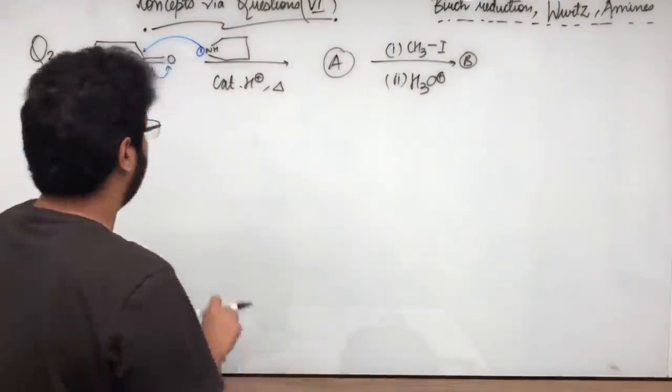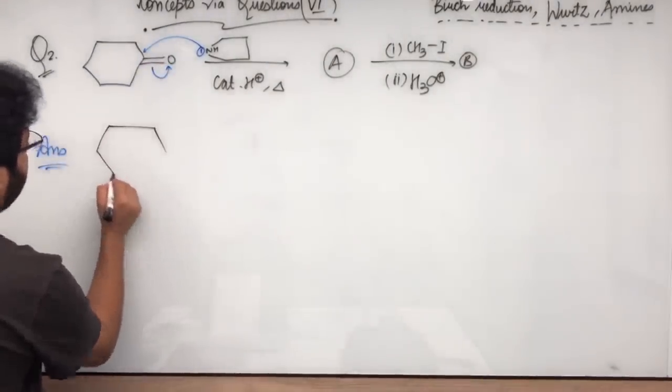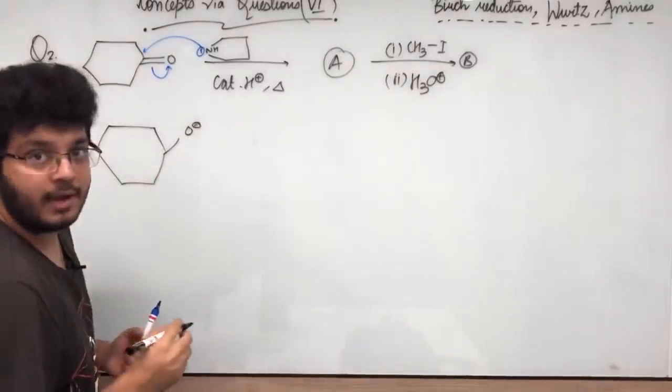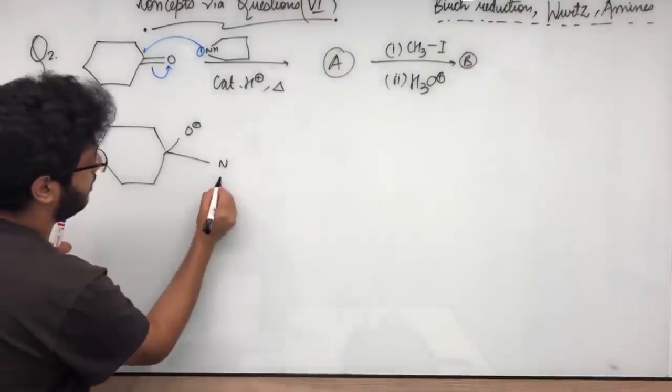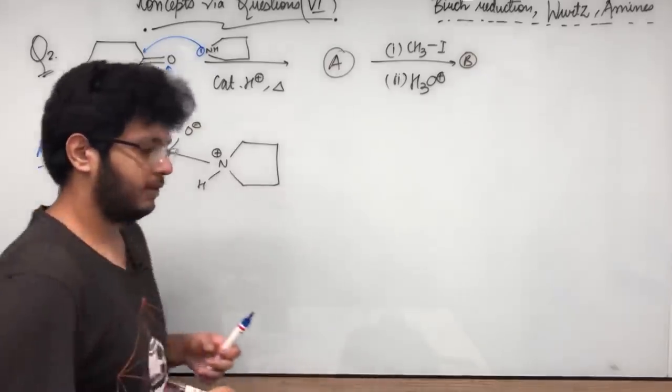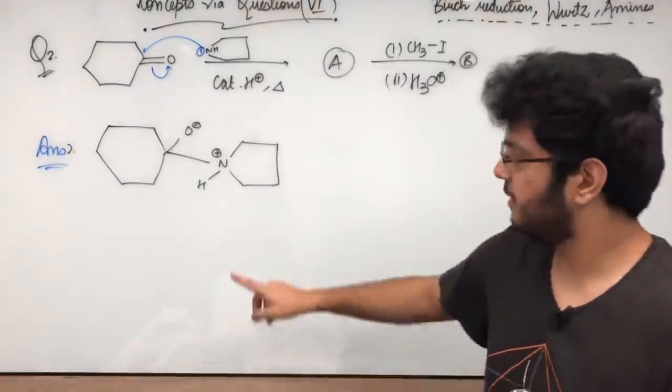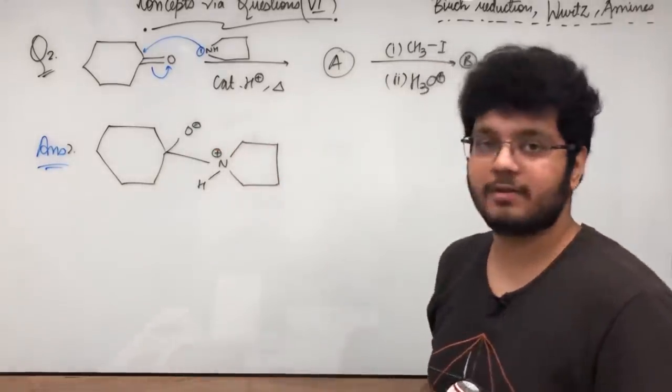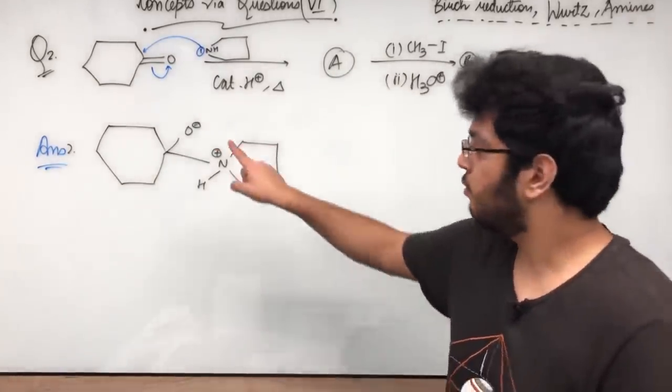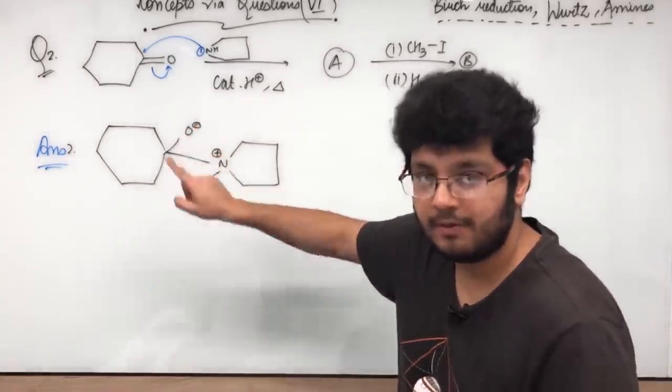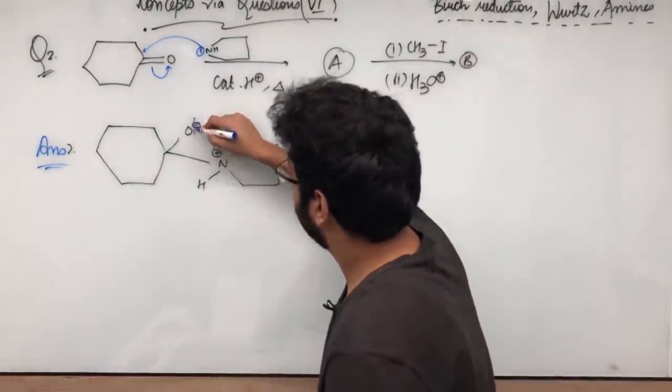Carbonyl, carbonyl has a delta plus charge. Nitrogen has a lone pair, so electron rich will react with the electron deficient. Simple nucleophilic. So what will happen to me? We get the formation of O minus and here we have N here plus and we get the formation of this species. Now we have catalytic H plus. H plus, what will happen? O minus react.